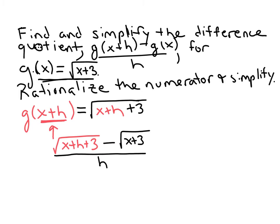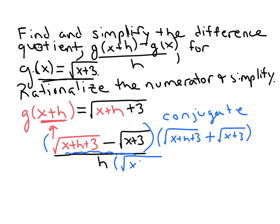So to rationalize an expression with radicals, we want to multiply by the conjugate of this expression. Multiply by the conjugate, which would be that same expression, so x plus h plus three plus the other radical, x plus three. And if we're going to multiply by that in the numerator, then we have to make sure we do the same thing in the denominator.